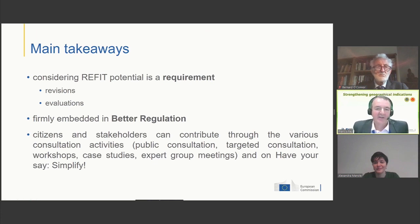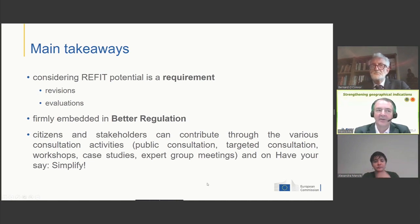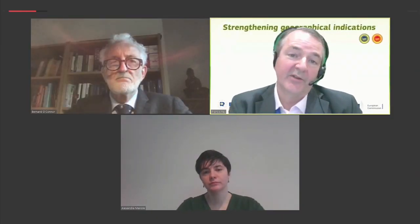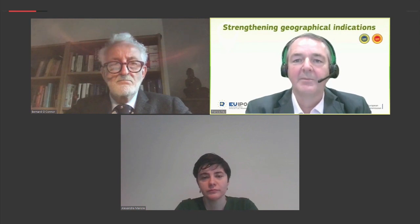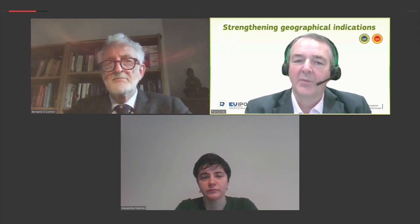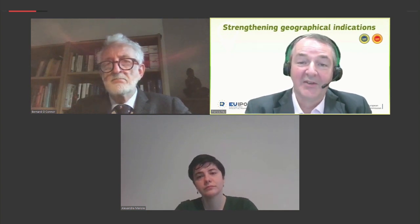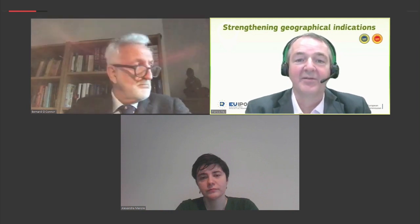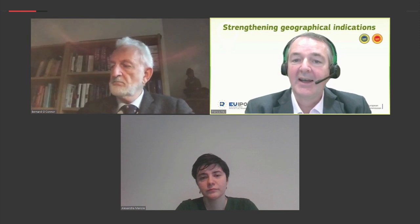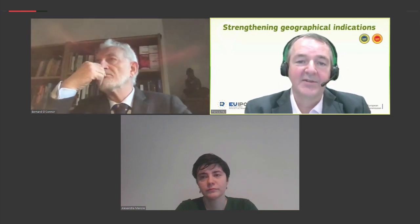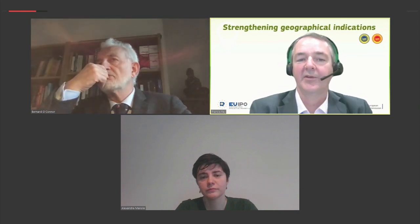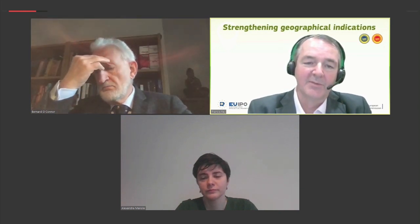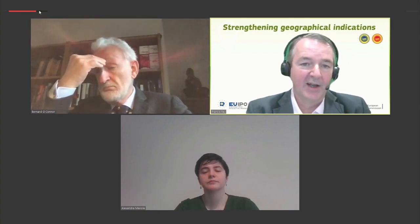Thank you very much indeed, Alexandra, for that fascinating account. Alexandra has underlined that the aim of REFIT — and she gave a very striking example at the end — is to save cost for producers and to reduce burdens and red tape, but without compromising on policy objectives. She pointed out that the GI review, the strengthening of GIs, is prominent in the REFIT scoreboard for 2021. And she's also underlined that the effectiveness of REFIT is proportionate to the quantity and quality of stakeholder input — this is very much part of the public outreach process in our review.